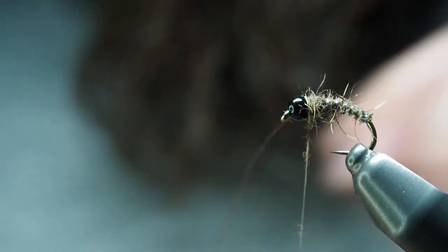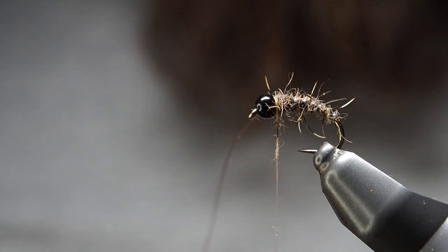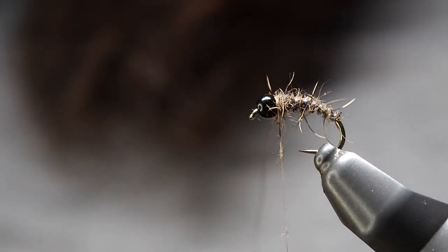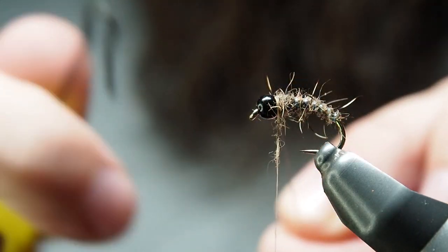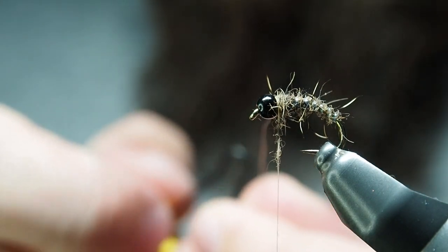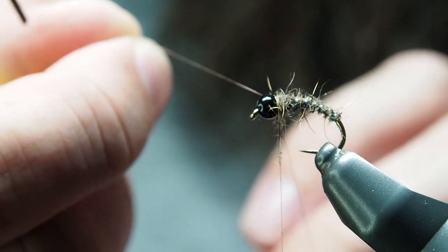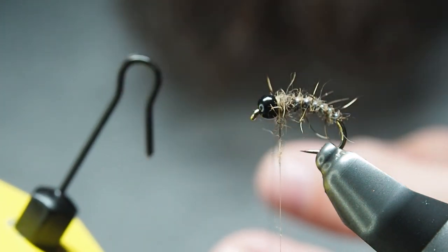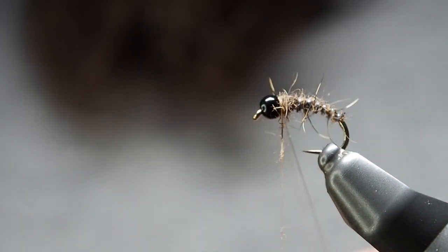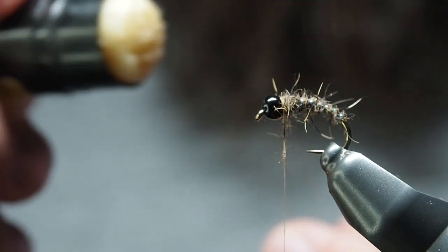Now we're on to our CDC dubbing loop. There's lots of tools out there - Petitjean has a whole range, Stonfo does as well. But I find this pretty easy. We're not trying to get a perfect little stacking of CDC, this is just designed to have a whole bunch of movement in it. I quite like these shepherd's hook tools for it.